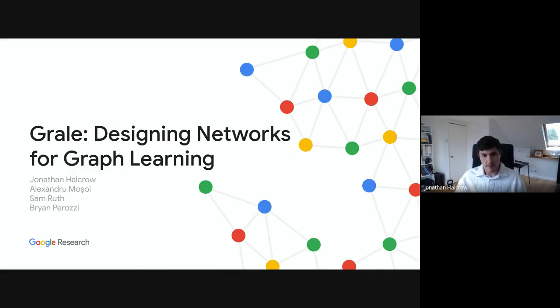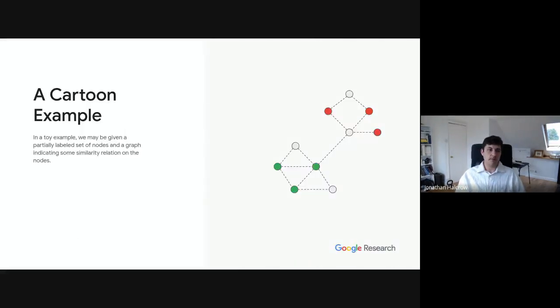So what do I mean by designing networks and graph learning? I'll start with a toy example of a graph learning problem. In the toy example, you might be given a partially labeled set of nodes and some graph on top of these nodes indicating some sort of a similarity relationship. And then we can use this graph to infer labels for the unlabeled nodes by spreading labels from the labeled set to the unlabeled set. So you can see on the right-hand side, we spread labels from these green nodes to infer that this node is green.